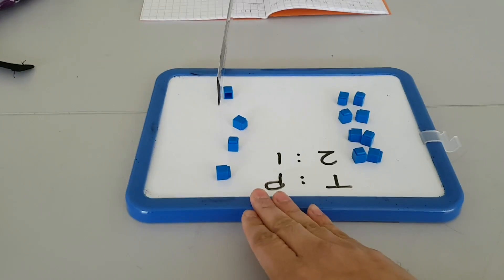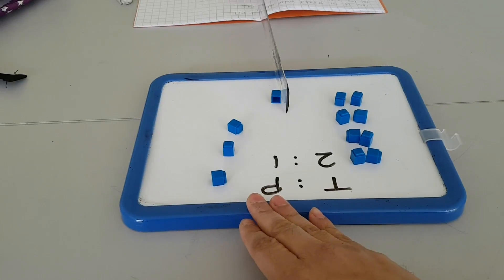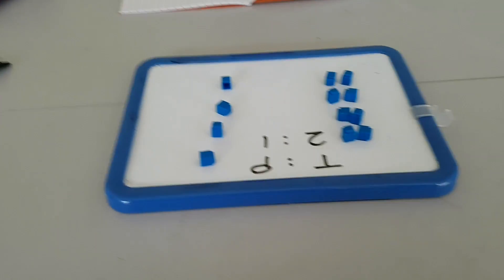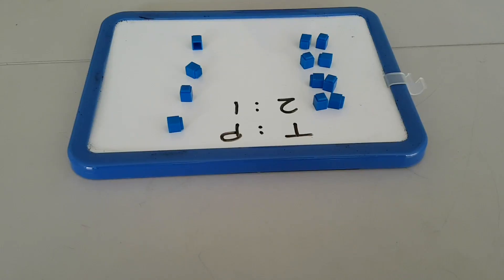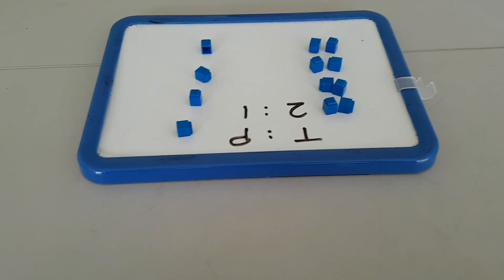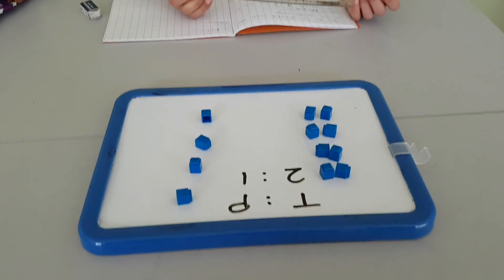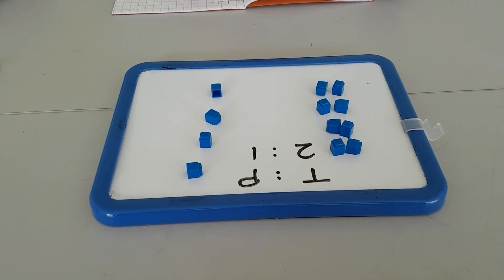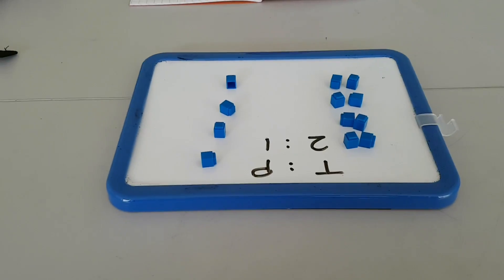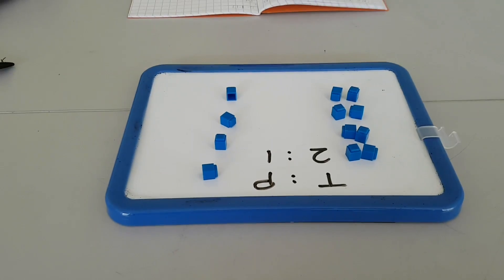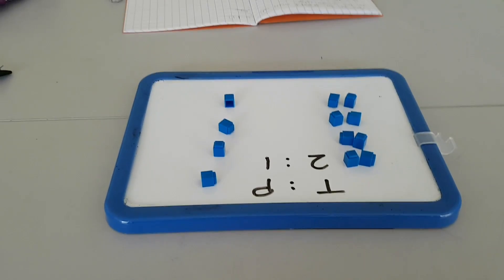So now tell me, when you shared - how many did we have at the beginning? How many of those counters? Twelve. So when we shared 12 sweets in the ratio two to one, how many sweets altogether does a teacher get?